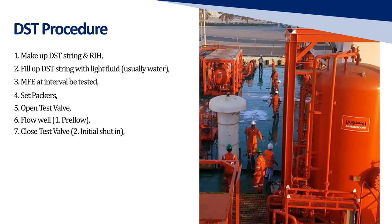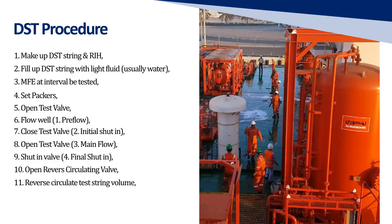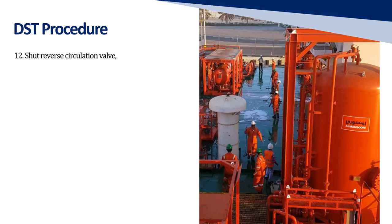7. Close test valve — initial shut-in. 8. Open test valve — main flow. 9. Shut in valve — final shut-in. 10. Open reverse circulating valve. 11. Reverse circulate test string volume. 12. Shut reverse circulation valve. 13. Unset packers. 14. Circulate hole. 15. Pull out of hole (POH) DST string.